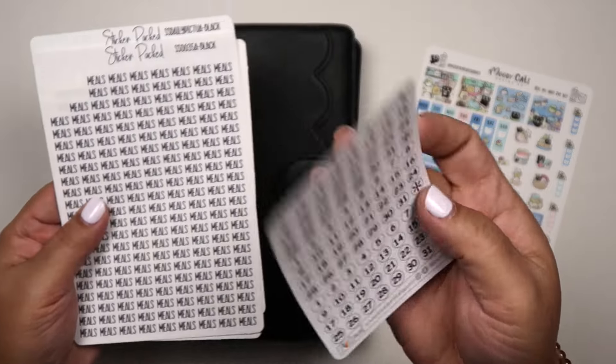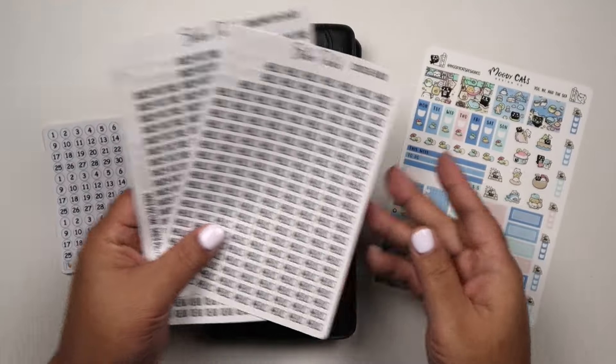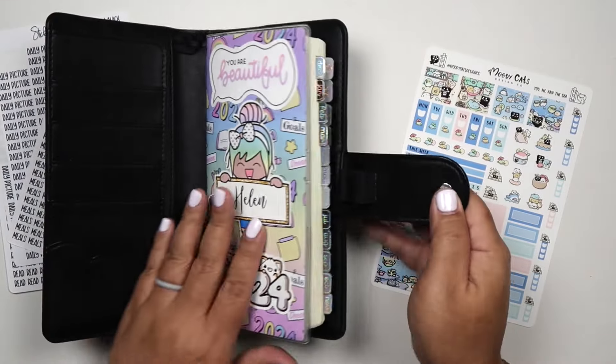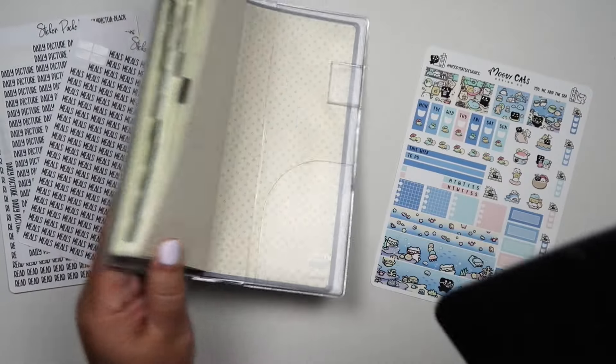I'll be using a kit by Moody Cats Design Co. And then here are some date dots that I printed myself and some word stickers by Sticker Pact. So let's go ahead and get started.